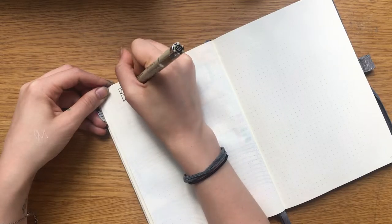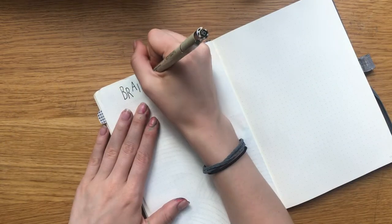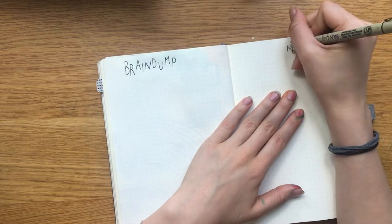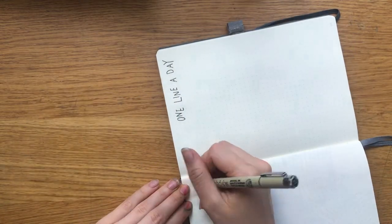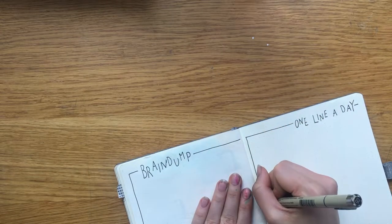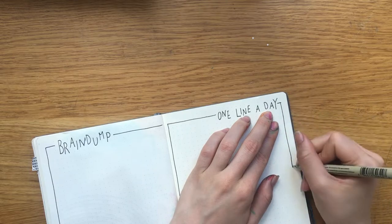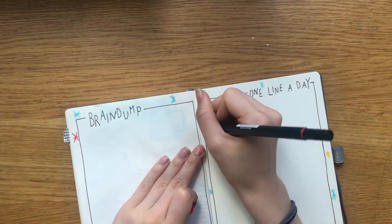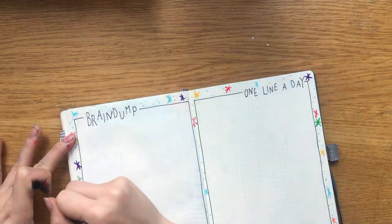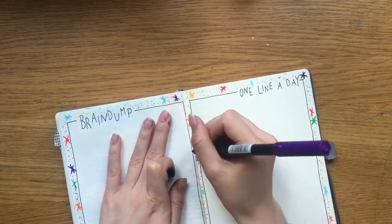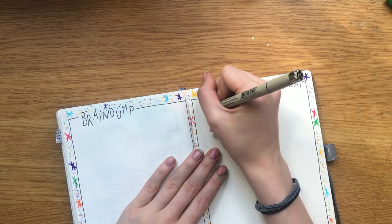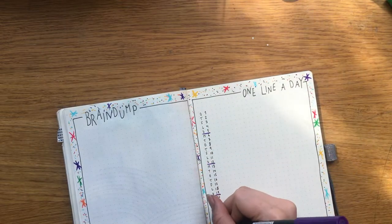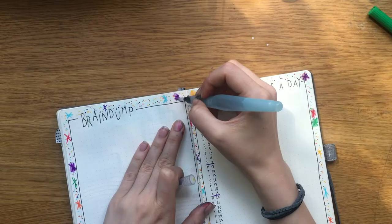On to my brain dump and one line a day page. I spelled brain with an M because I'm just that talented but that was easily fixed. I wanted to keep these two pages kind of simple but at the same time not. So I added a black border to both of the pages and then I went in with my Tombow brush pens and added those big sparkle glitter doodles all over the place outside the borders. After adding the numbers of the days to my one line a day page I went in with my water pencil again and watered out the bigger sparkles to keep it kind of cohesive with the other spreads.